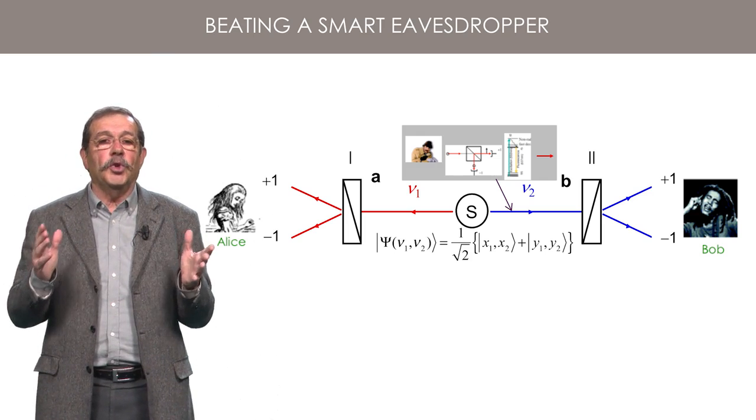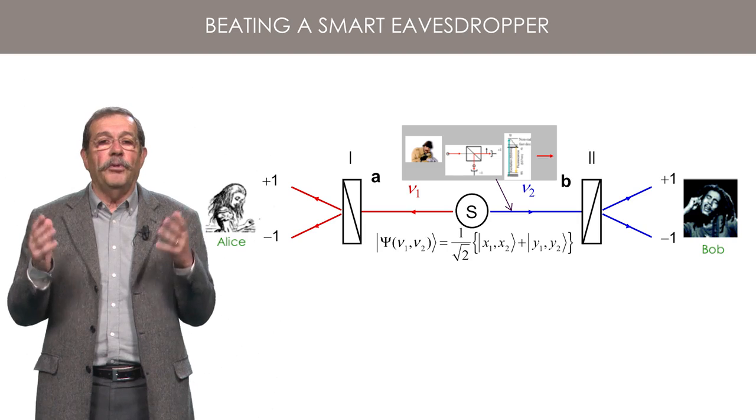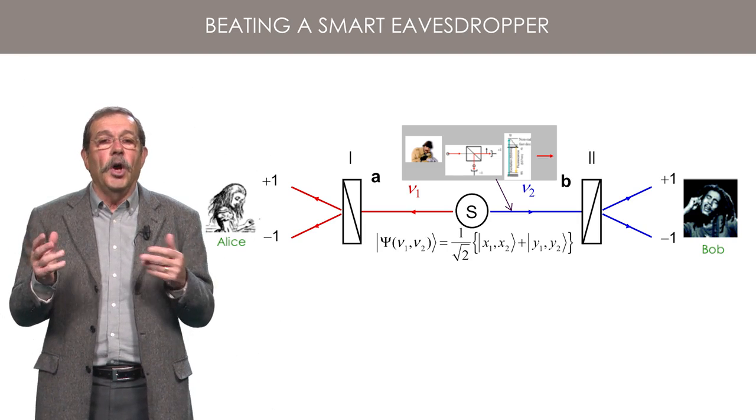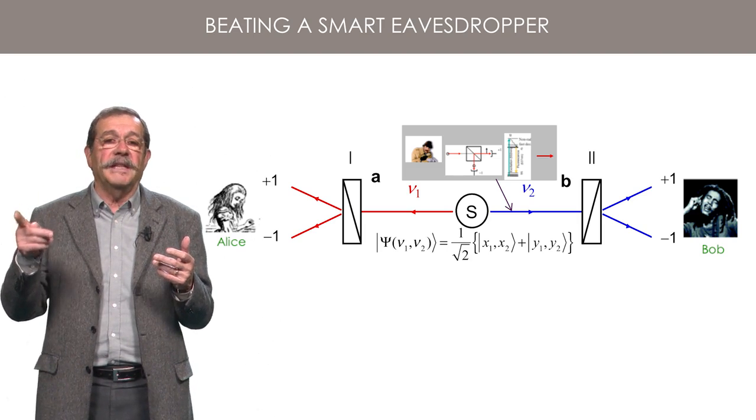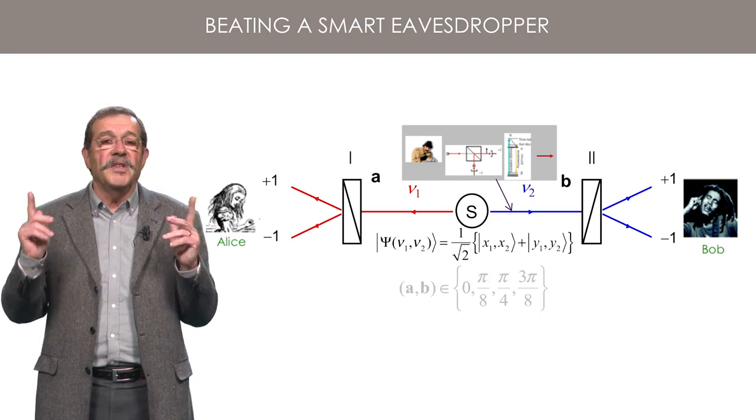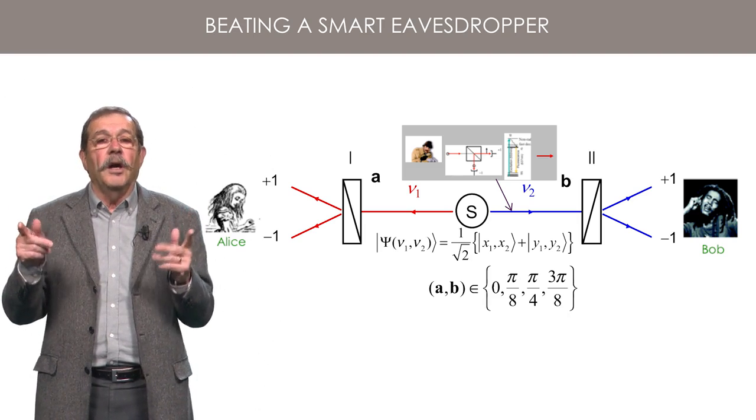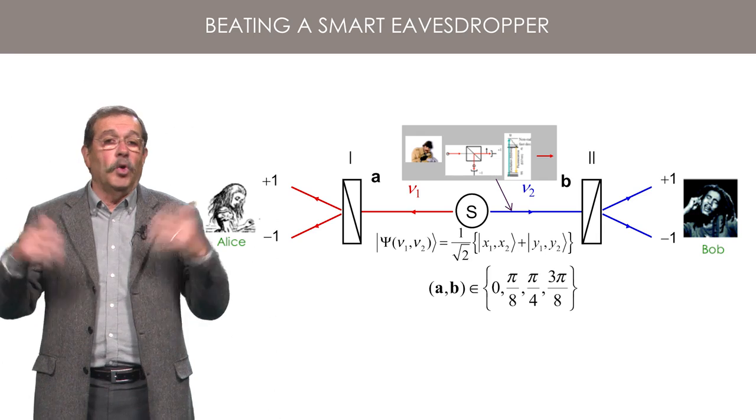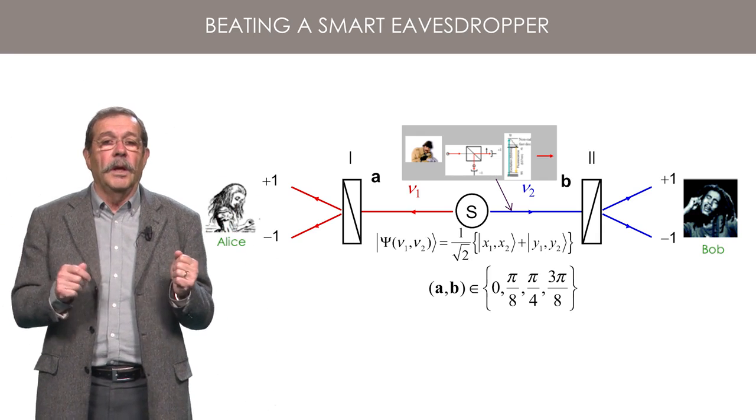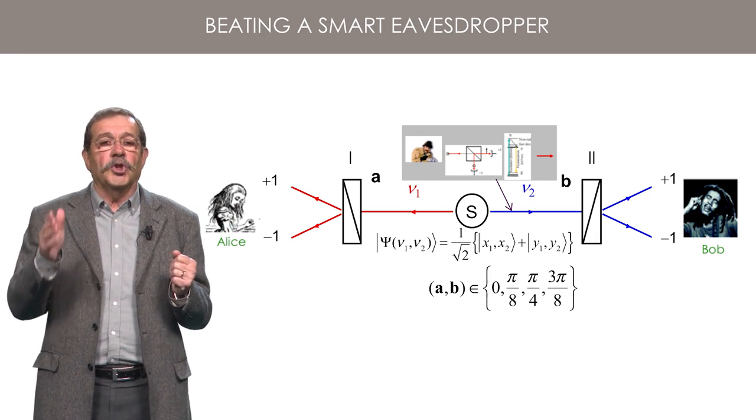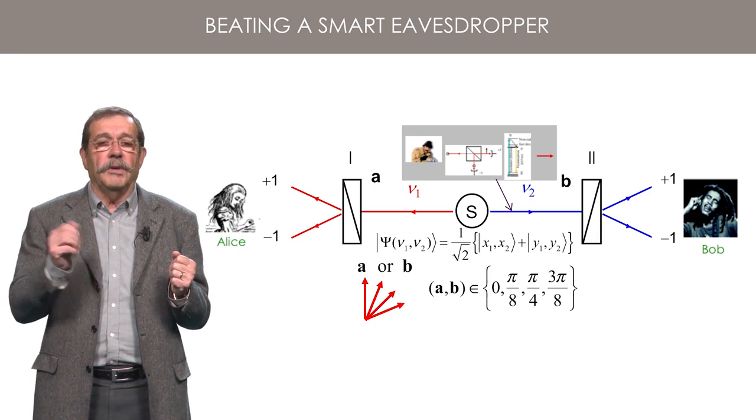To beat the eavesdropper, Alice and Bob will then choose randomly their polarizer's orientations along directions making relative angles with values 0 or pi over 8 or 3 pi over 8 or other orientations. The set of orientations shown here correspond to that situation.